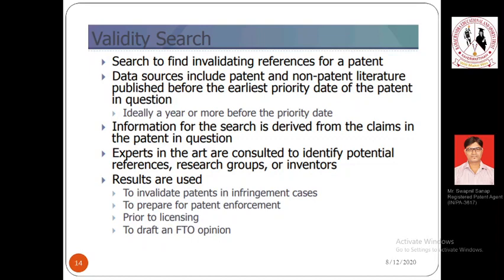Ideally, literature a year or more before the priority date is considered the ideal result. For example, if I filed an application in 2016 and it was granted in 2020, and I want to cancel this patent, I will try to find prior art references before the filing date of 2016. Any reference before 2016 would be ideal, and any result after 2016 will not be helpful since the application was already filed before those references.